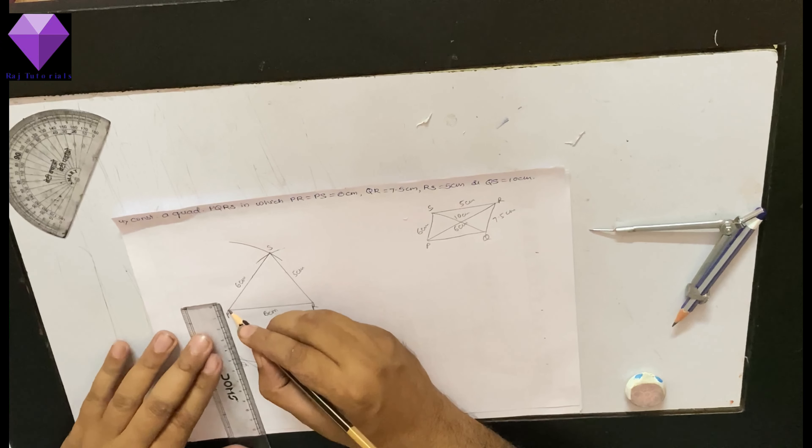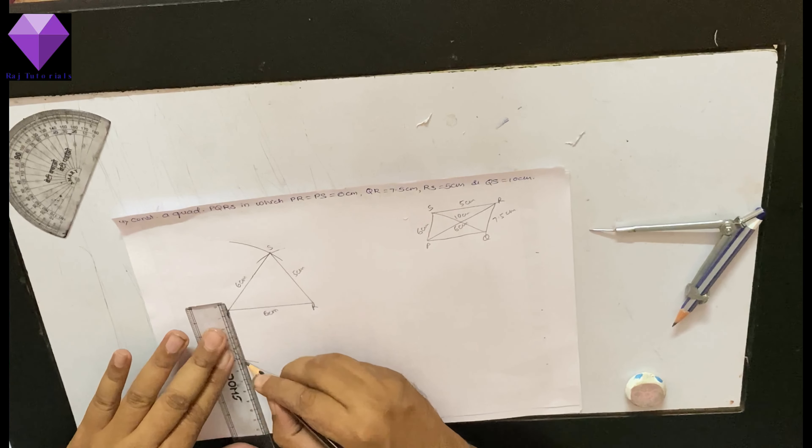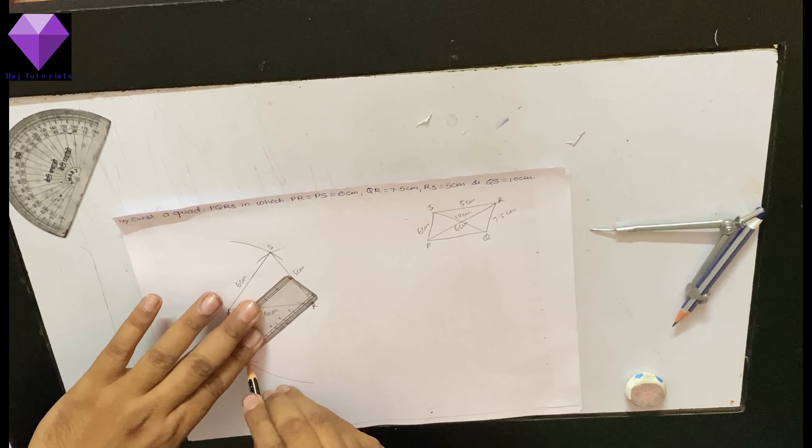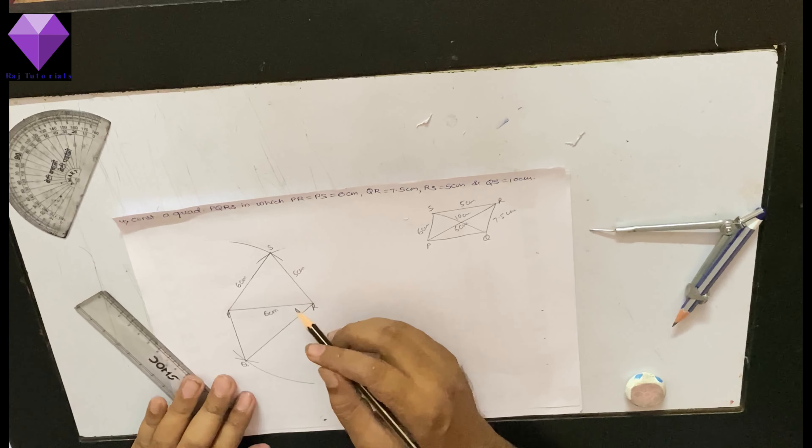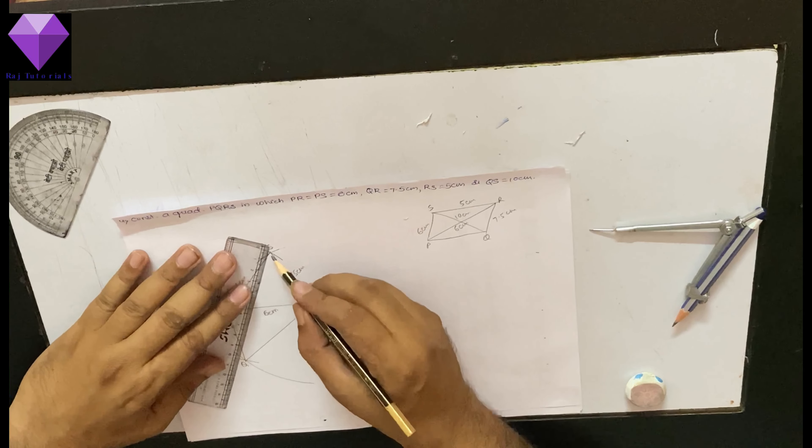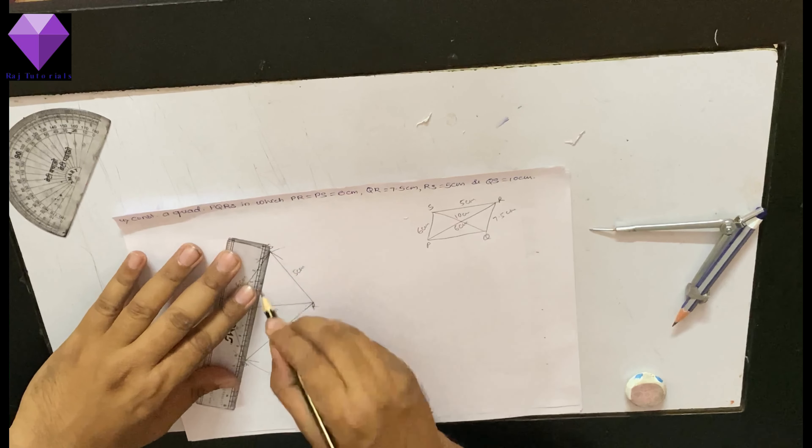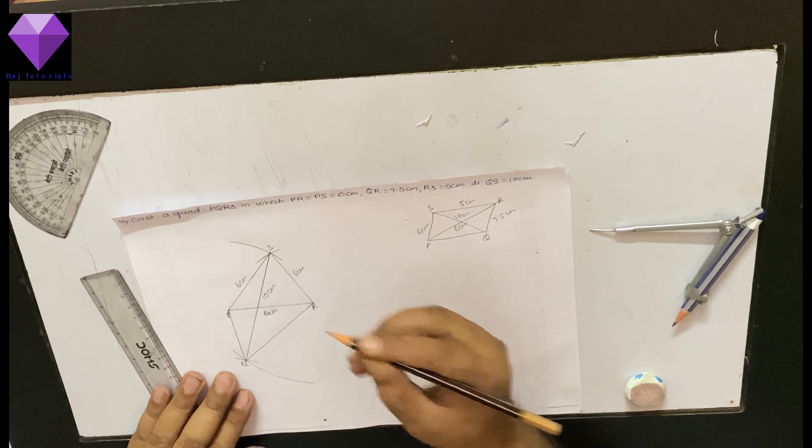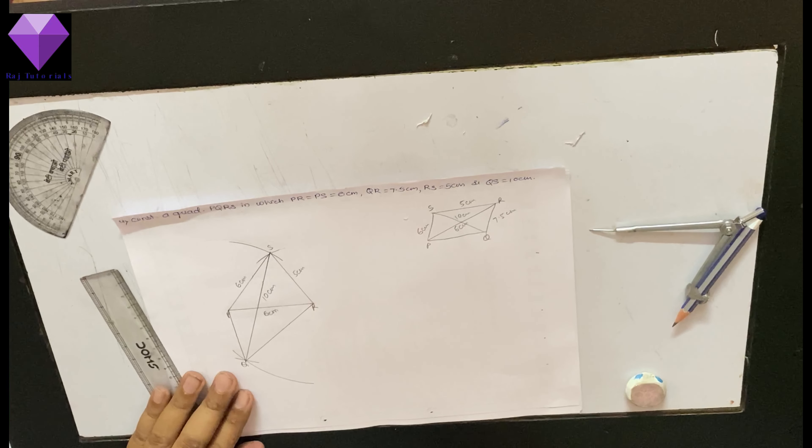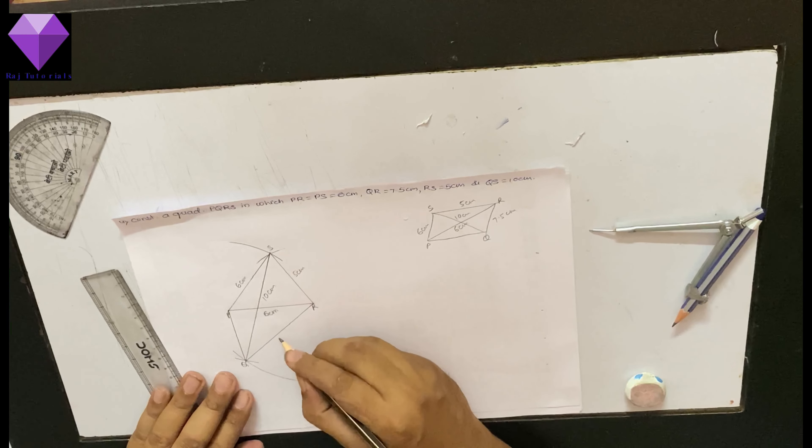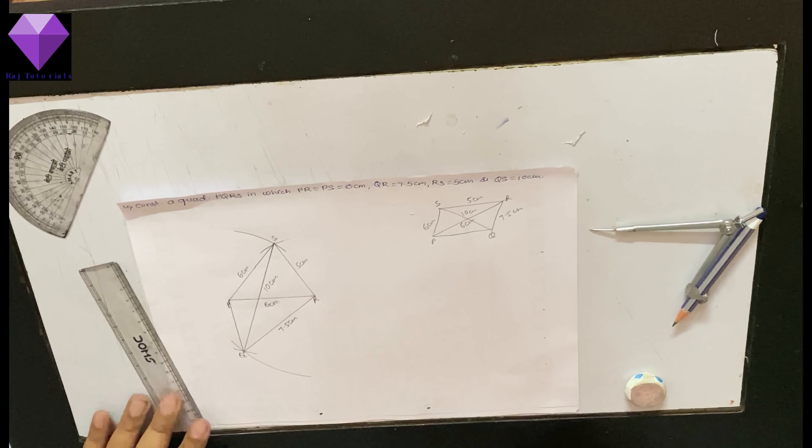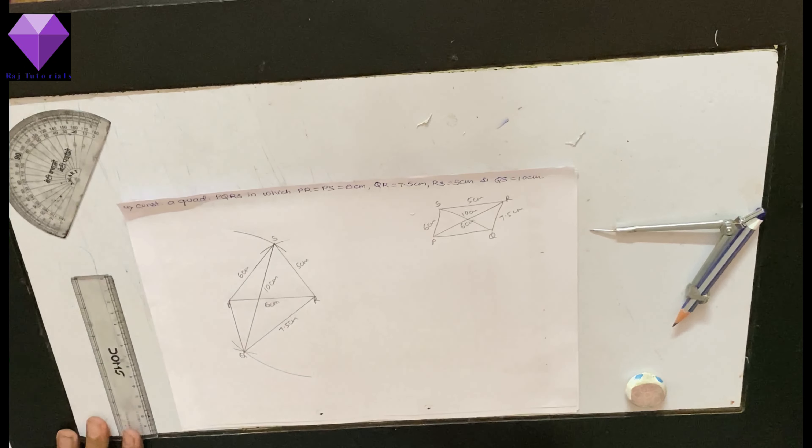Now, I will join PQ and QR and SQ. SQ is 10 cm. QR is 7.5 cm. Thus, my quadrilateral PQRS is ready. Thank you.